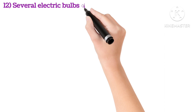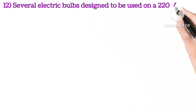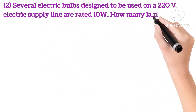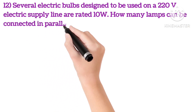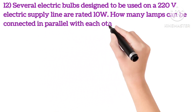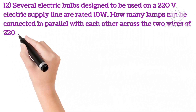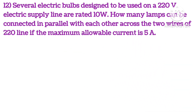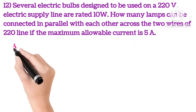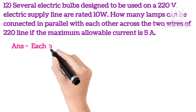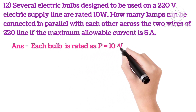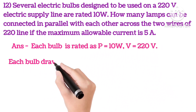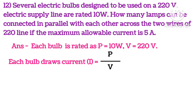12th: several electric bulbs designed to be used on 220V electric supply line are rated 10 watts. How many lamps can be connected in parallel with each other across the two wires of the 220V line if the maximum allowable current is 5A?